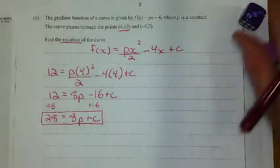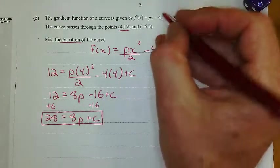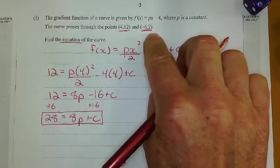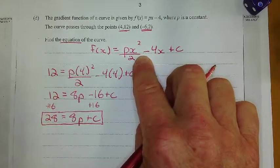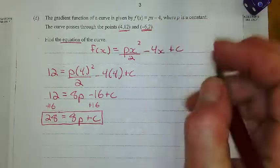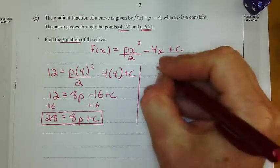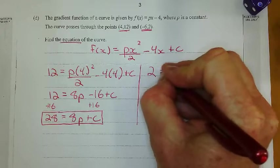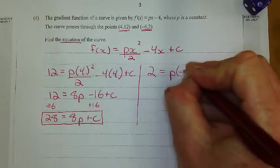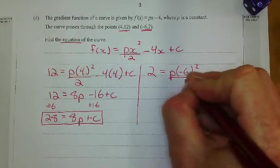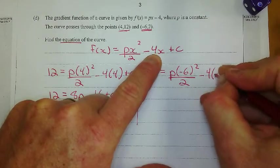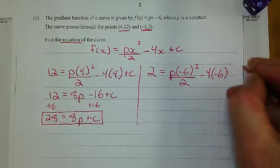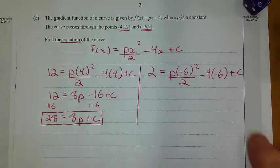And so I wasn't really sure what to do next, to be honest, so I just did the same thing with this point. I just substituted this coordinate in for here. All right, so I'll substitute 2 in for f of x, so 2 equals p times negative 6 squared over 2 minus 4 times negative 6 plus that constant, which I don't know yet.